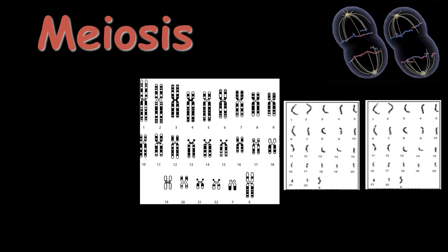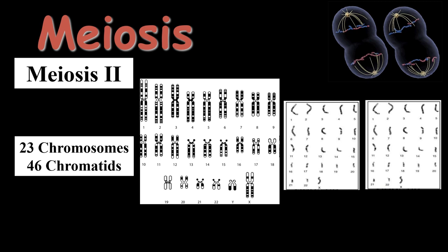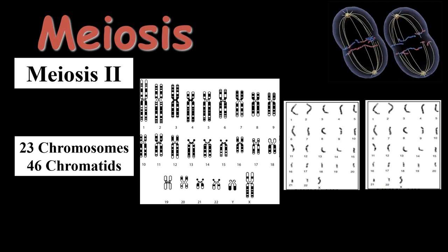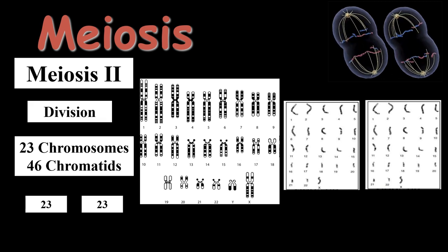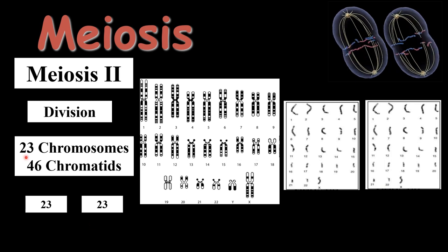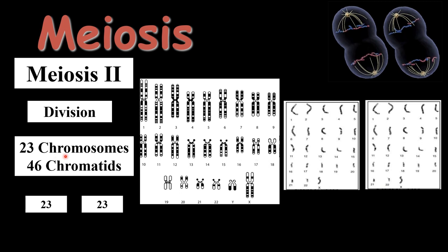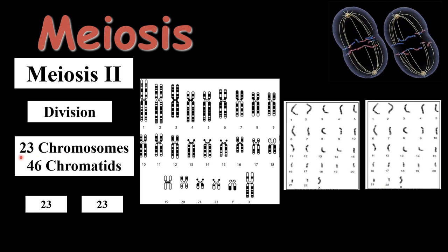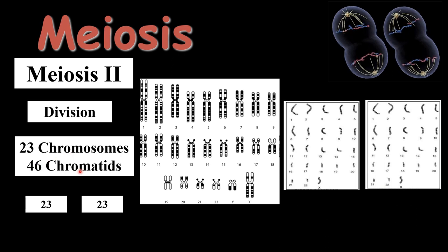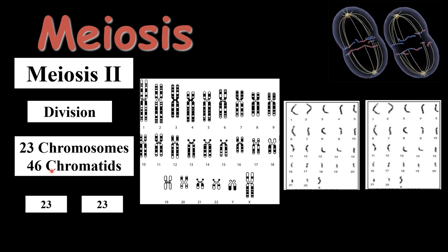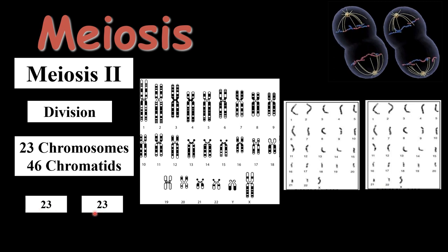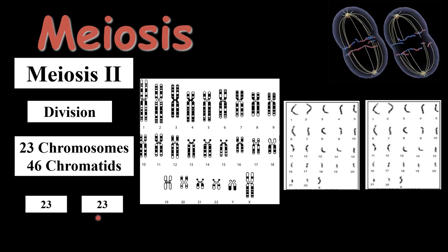Meiosis 1 is followed by Meiosis 2, which is known as the division phase, in which the chromosomes are simply separated or divided. There are 23 chromosomes in each cell, meaning 23 chromosomes will have 46 chromatids. The chromatid separation takes place, and each cell will contain 23 chromatids and 23 chromatids — which means 23 chromosomes and 23 chromosomes.